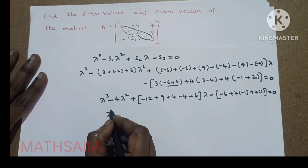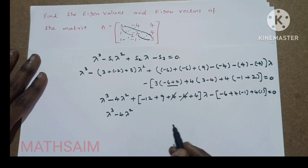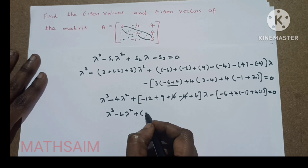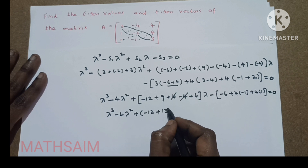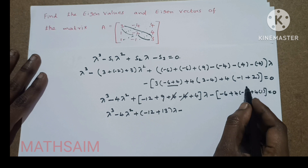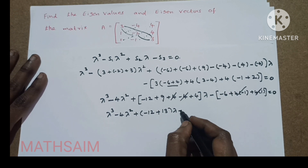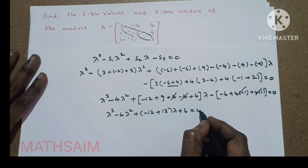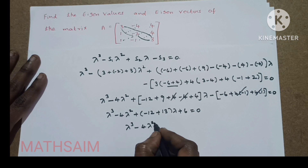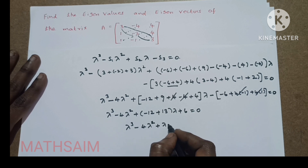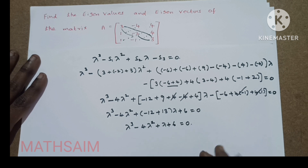This simplifies to: lambda cubed minus 4·lambda squared. Then 4 minus 4 cancel, so plus minus 12 plus 13 gives plus 1. Then minus 4 plus 4 cancel, and combining the remaining terms gives plus 6, equal to 0. So the characteristic equation is: lambda cubed minus 4·lambda squared plus lambda minus 6 equals 0.